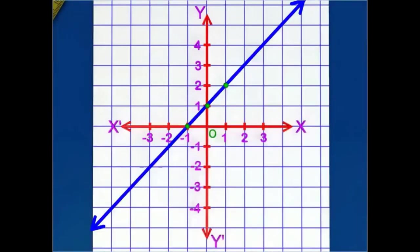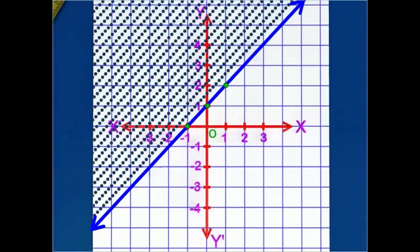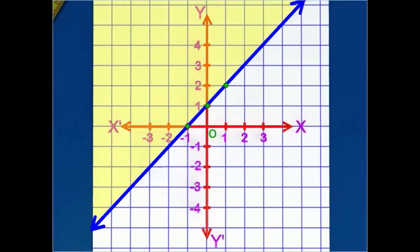This means that the points lying in the opposite region satisfy the given inequation. Thus, shade the opposite region. The set of points in the shaded region represents the inequation y minus x is greater than 1.